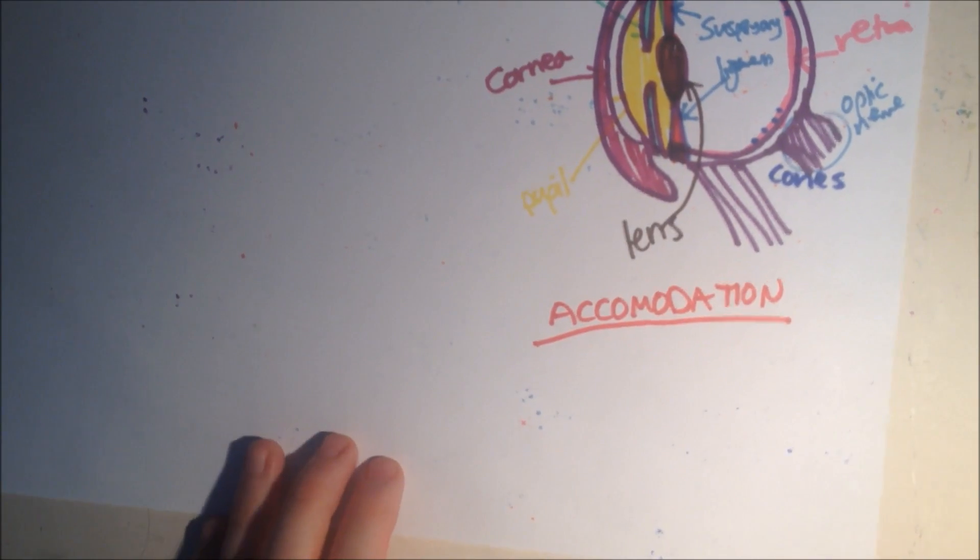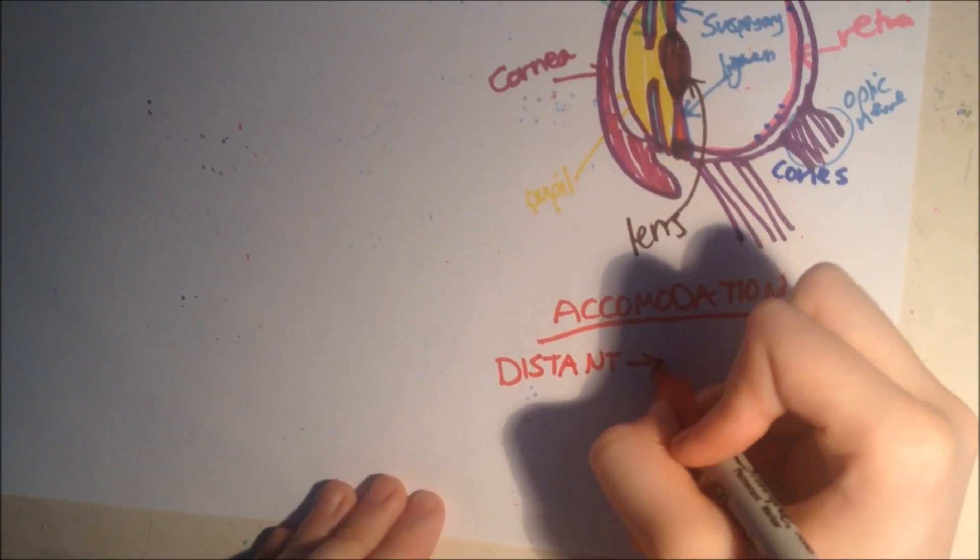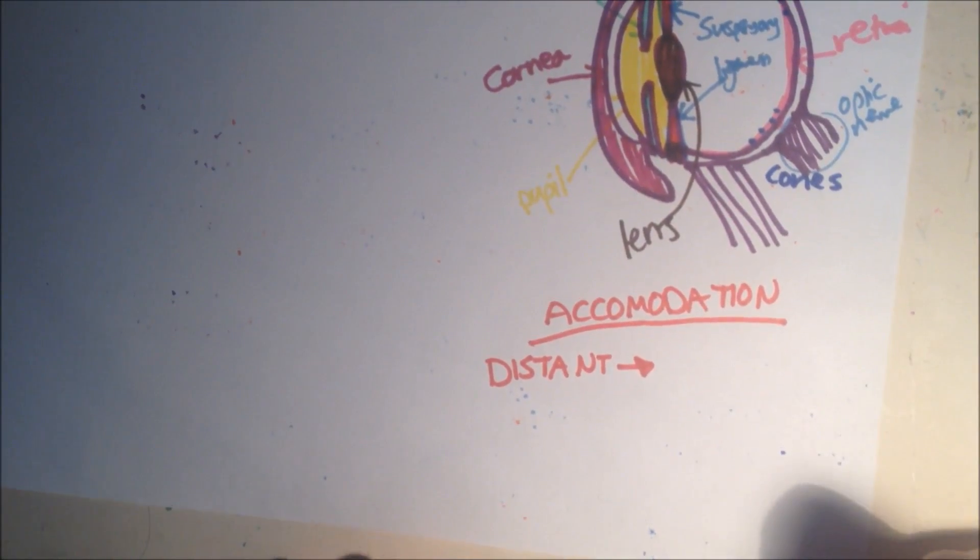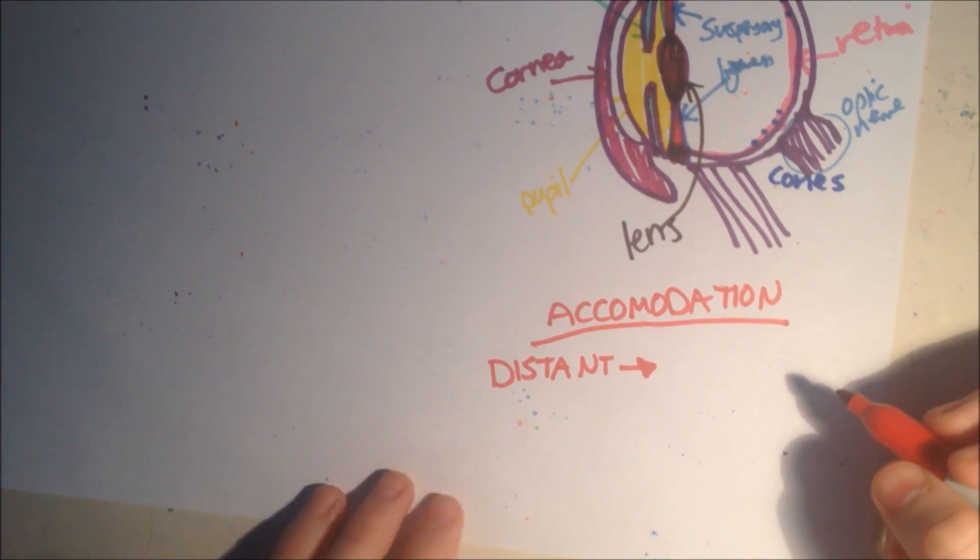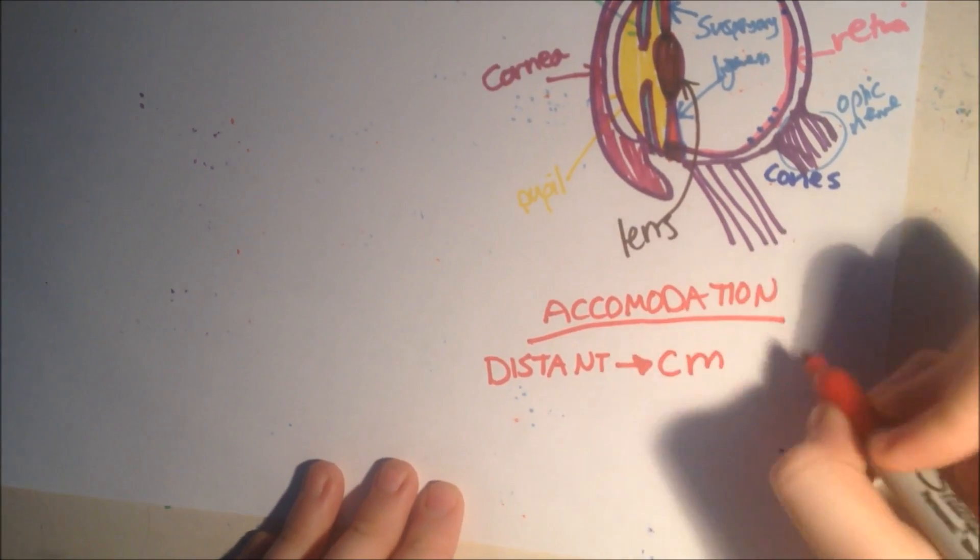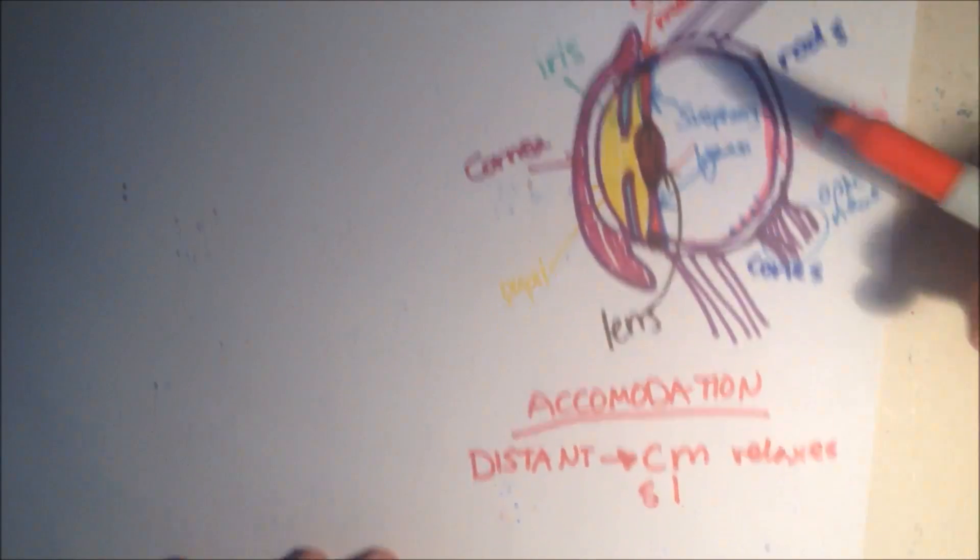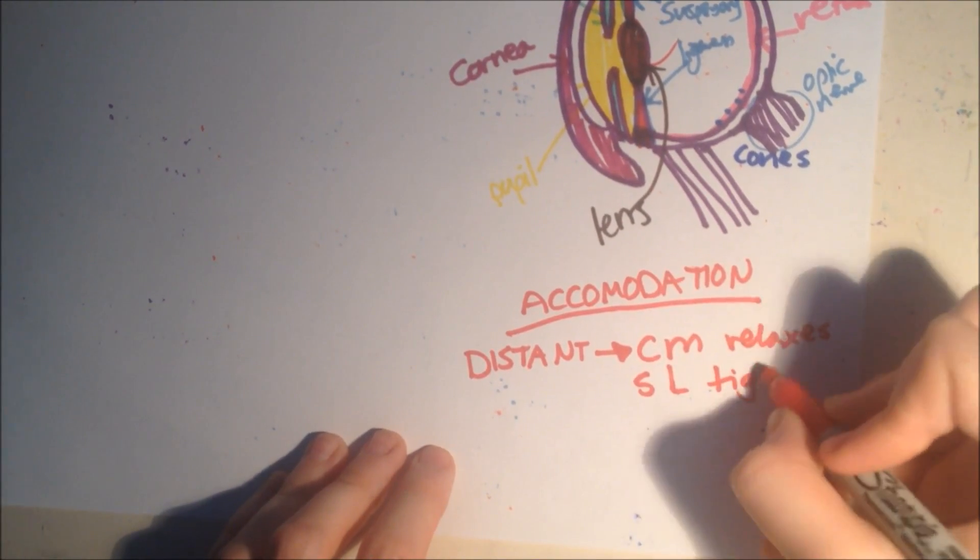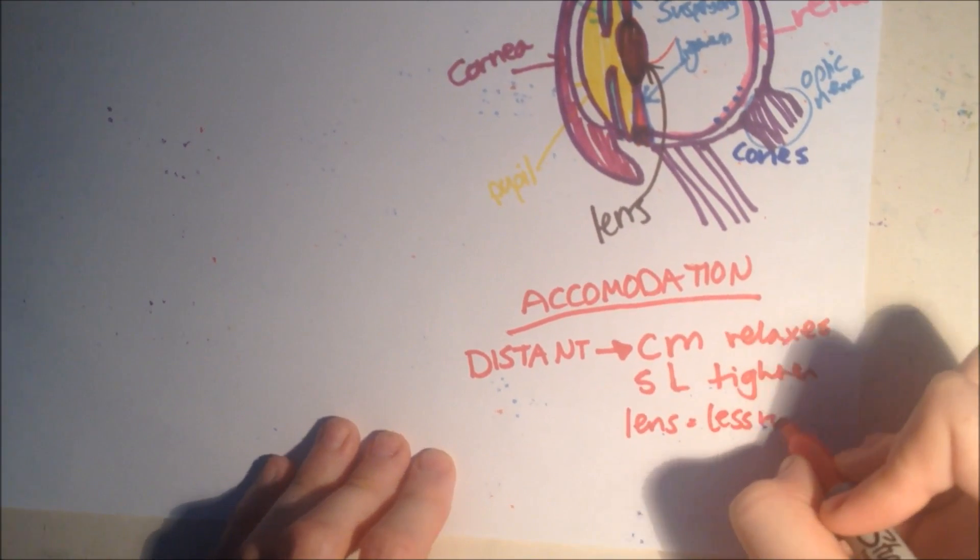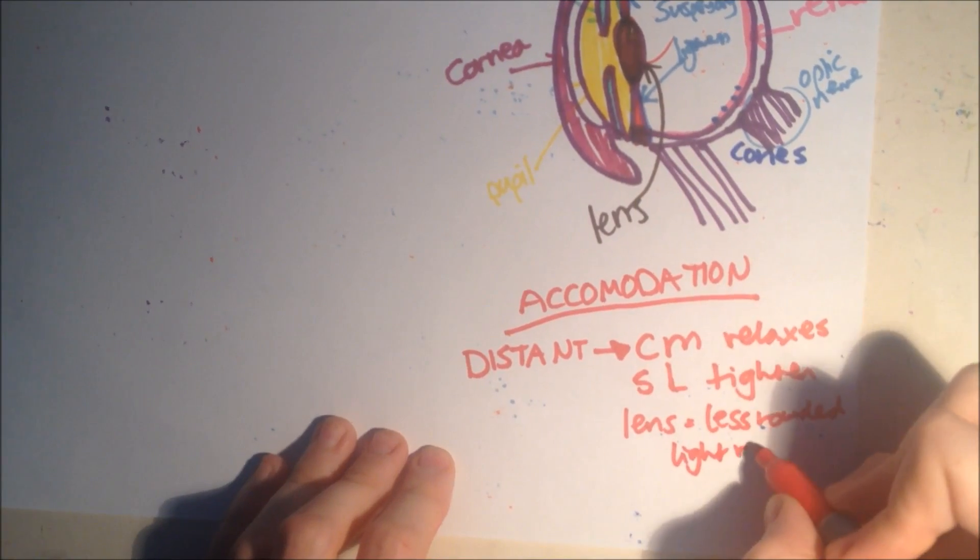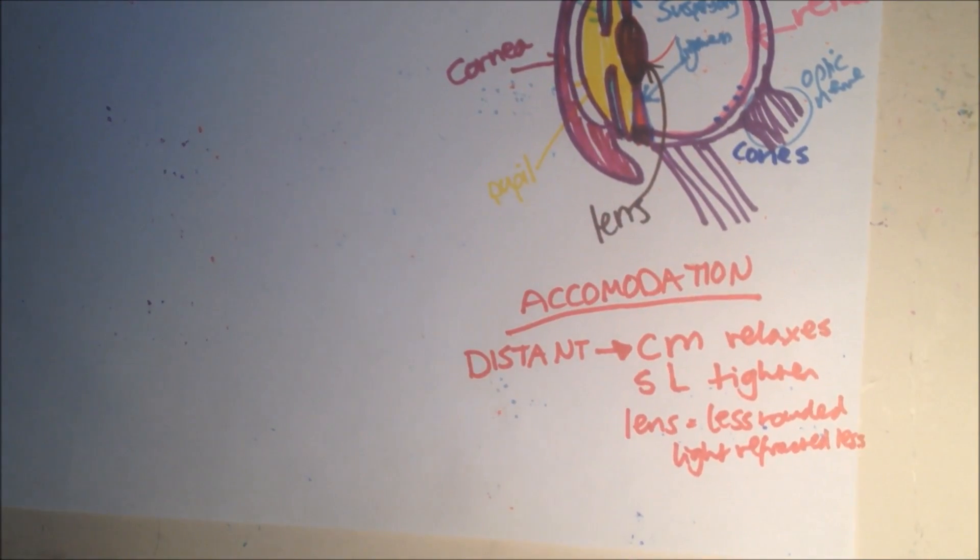So the lens is sorting out what your eye does, whereas you'd be sorting out where you're staying for your accommodation. So to look at distant objects, I always get these the wrong way round. But that's okay, we'll just remember it this way. So distant objects, the ciliary muscle relaxes, which allows the suspensory ligament, these are both round here remember, to tighten. And this makes it less rounded, so the light is refracted less.